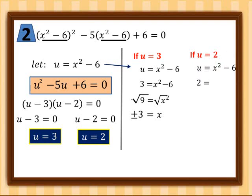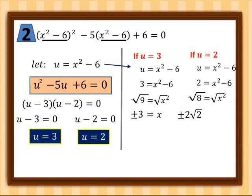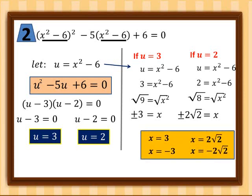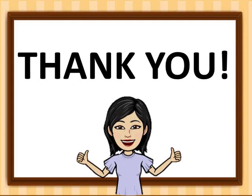If u equals two, substituting into u = x² - 6 gives two equals x² - 6. Transposing, we get x² equals eight. The square root of eight is positive and negative two square root of two, so x equals positive and negative two square root of two. The values of x are three, negative three, two square root of two, and negative two square root of two — four values of x since our equation is degree four. That's all for today, thank you!